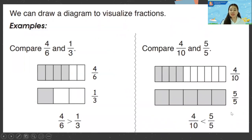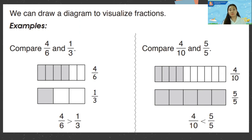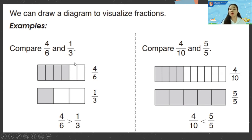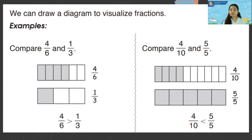We can draw a diagram to visualize fractions — it is easier with a picture to know which one to compare, because in drawing you will see which one is shaded more. For example, comparing four sixths and one third: draw six rectangles and shade four, then draw the same rectangle divided by three and shade only one. As you can see, the shaded part is bigger on four sixths than on one third, so four sixths is greater than one third.